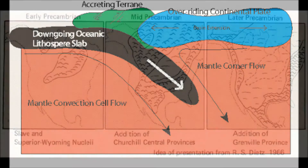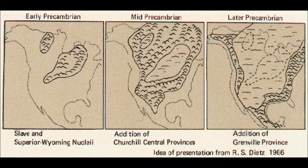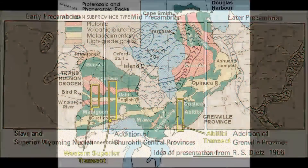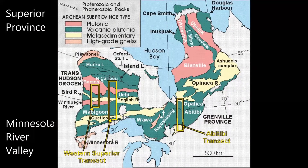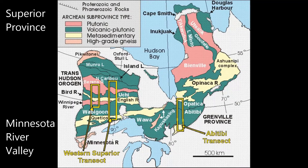Over billions of years, these events have contributed to the geologic diversity of Minnesota and Wisconsin as we know them today. We have the Superior Province in the colored area, and the Mississippi River Valley as the orangish-tan color in the bottom left. These two collided an estimated 2.8 billion years ago.